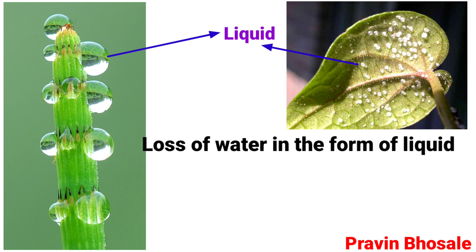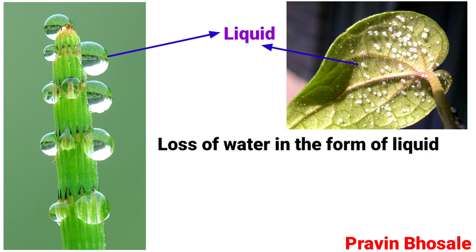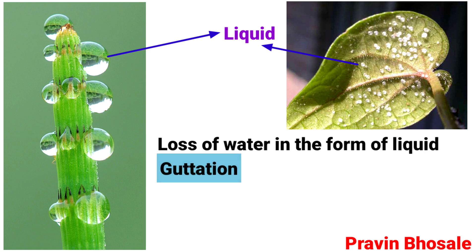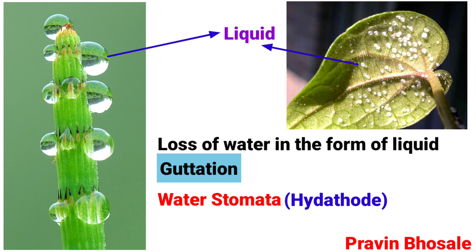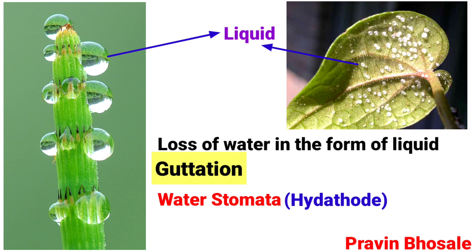The loss of water in the form of liquid is called guttation. It occurs through a special structure called water stomata or hydathodes. The process of water loss in liquid form through hydathodes is called guttation.